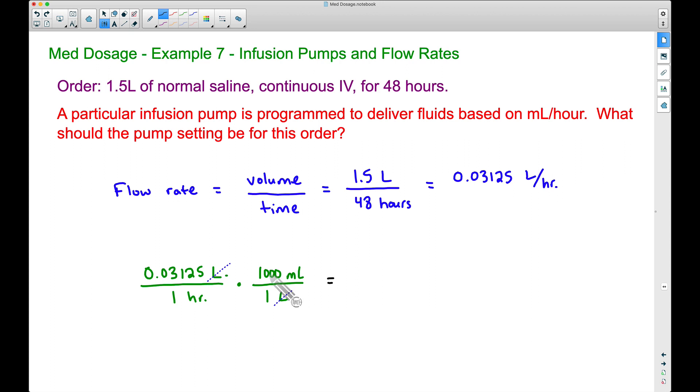a shortcut here—if you multiply by 1,000, all you're going to do is move your decimal three places to the right. That will give you 31.25. The word that we have left up top is milliliters, and at the bottom, if we take one hour times one, that's just one hour.